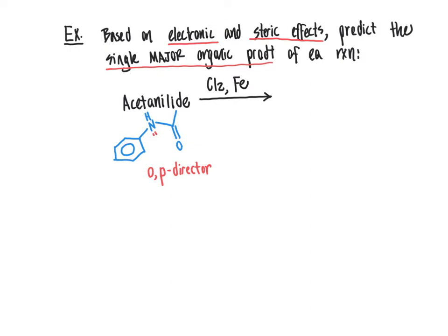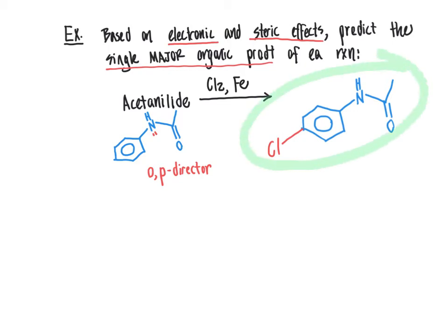Electronics steer us to know the product must be ortho or para — not meta, since electronic effects are the most important consideration. As a second consideration, steric effects further narrow down whether ortho or para is preferable. Given the relatively bulky group already attached, the major organic product corresponds to bringing the electrophilic substituent at the para position. With the reagent mixture of iron catalyst and Cl2, the electrophile is chlorine, placed at the para position as the single major organic product.